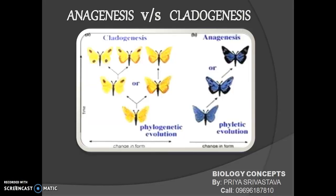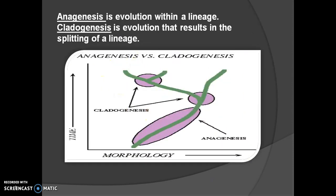We are discussing module three on evolution. Today's topic is anagenesis versus cladogenesis. We will discuss what anagenesis is and what cladogenesis is. Anagenesis is evolution within a lineage, while cladogenesis is evolution that results in the splitting of a lineage — splitting is a must in cladogenesis.